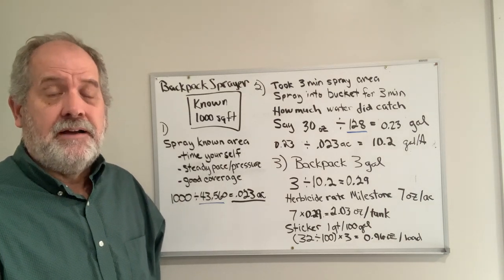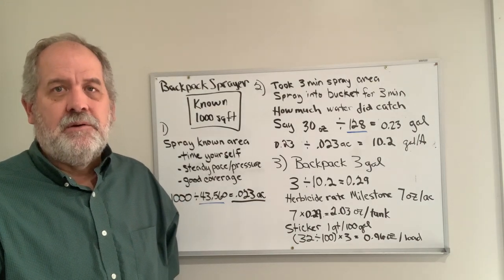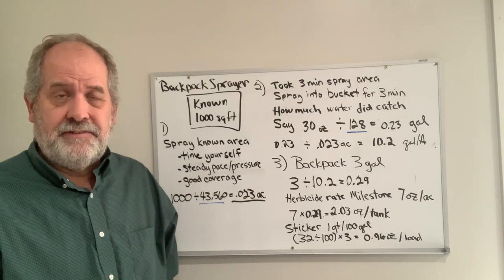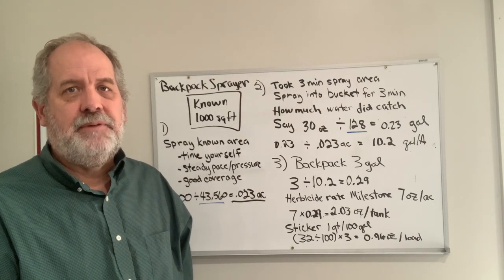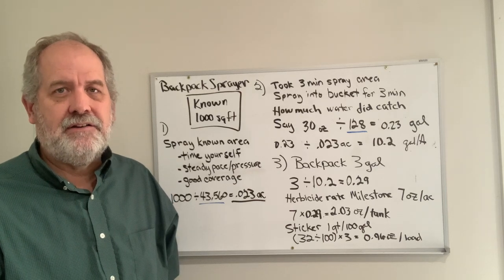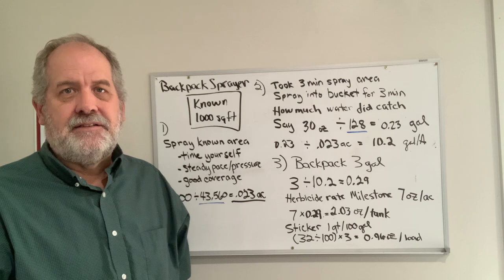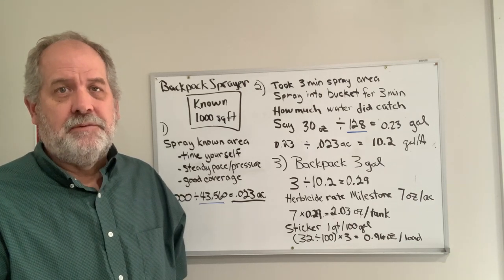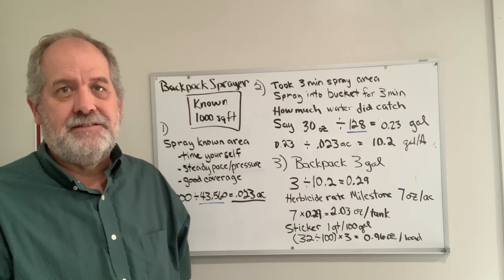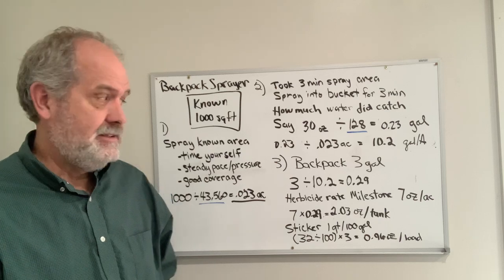You'll want to mark out a known area. Generally 1000 square feet is sufficient, and you will time yourself as you spray this area, looking for inconsistencies in your pattern. Try to make the best pattern you can with the most consistent pace. Do not stop in the middle of the application as you're timing yourself. You'll be able to see your pattern, skips, and misses to help you improve for greater consistency.